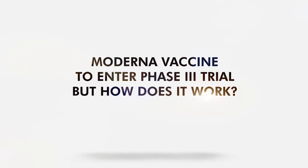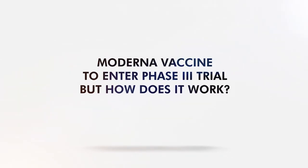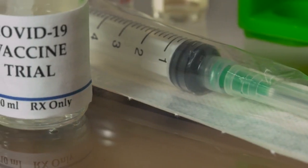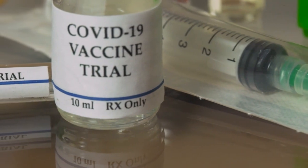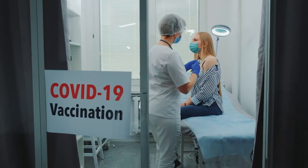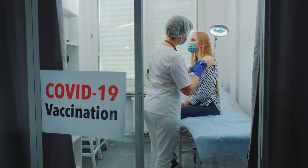Moderna Vaccine to Enter Phase 3 Trial But How Does It Work? Moderna's vaccine is set to enter phase 3 clinical trial. A total of 30,000 participants are expected throughout the trial period.